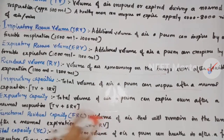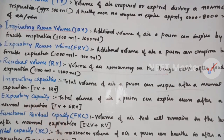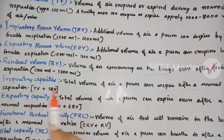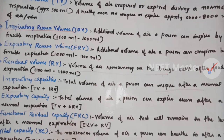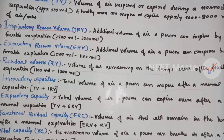The total volume of air a person can expire even after a normal inspiration — that is the expiratory capacity. For this, you need a normal inspiration, which gives you TV. You also need ERV, the expiratory reserve volume. So the expiratory capacity is TV plus ERV.